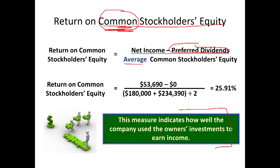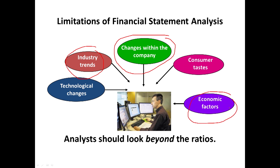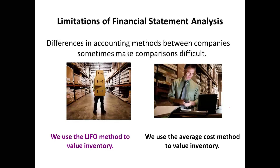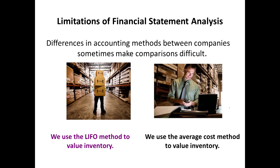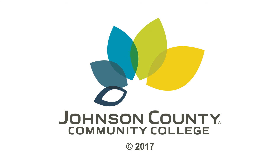A few closing thoughts on the limitations: you obviously need to not just concentrate totally on ratios, but also look at trends in the industry. Maybe there are big changes happening within the company, or maybe the economy is not doing well — there are other things to take into consideration. One final warning: when comparing to other companies, they may use different methods of accounting. For example, we might use the LIFO method where they use the average cost method. So you need to make sure that you're making meaningful comparisons.